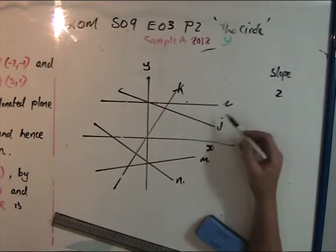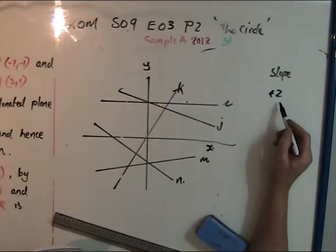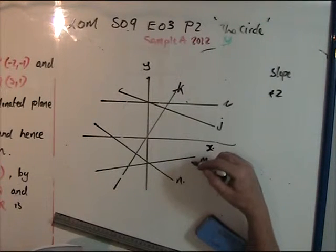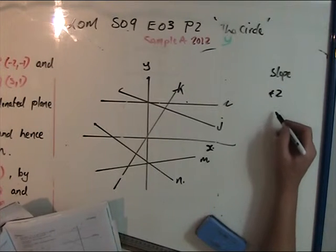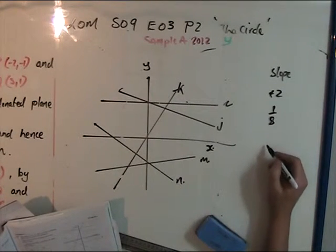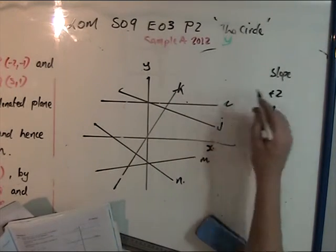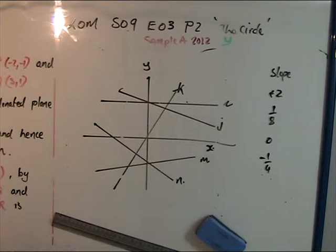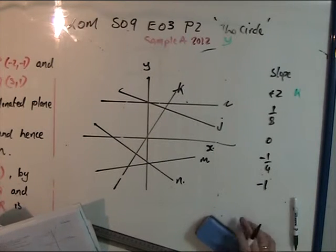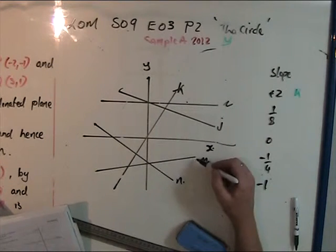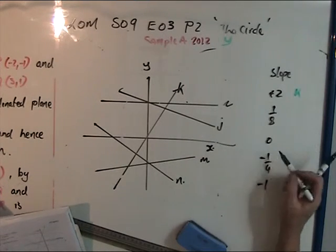We need to identify which line corresponds to each slope. A slope of 2 is very positive, and I don't see anything greater than 2. Since there were so many lines, I deduced that line K has slope 2.